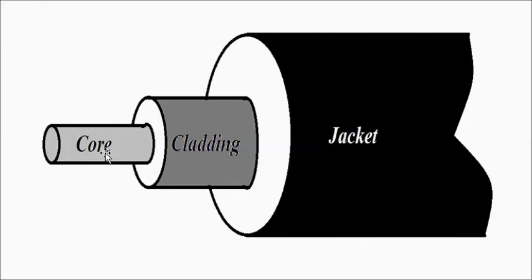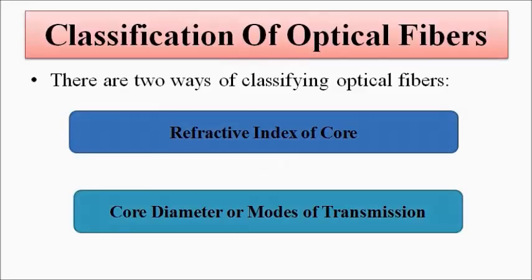A variation in one of these parameters — either the refractive index or the diameter — will give us a different type of optical fiber. There are two ways of classifying optical fibers: first, on the basis of the refractive index of the core, and second, on the basis of the diameter of the core.